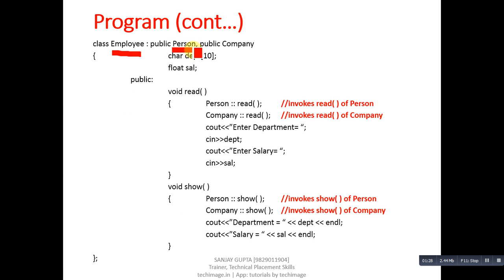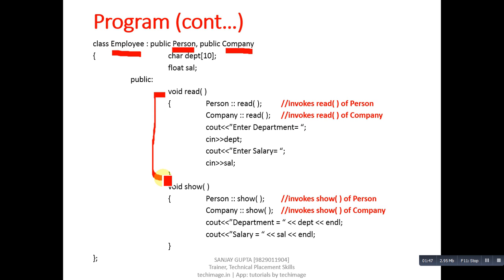The third class is Employee, which is inheriting both Person and Company classes. This means features of both Person and Company are available inside the Employee class. It has two attributes: department and salary. In the public section, the read function is defined — it first calls the read function of Person class, then the read function of Company class.